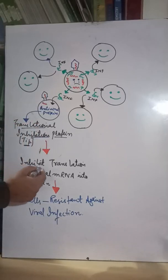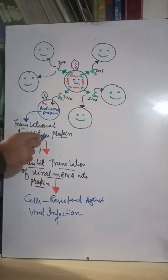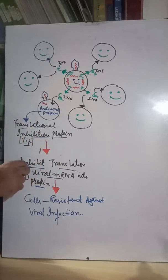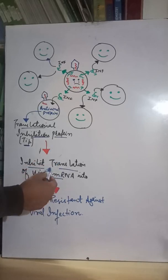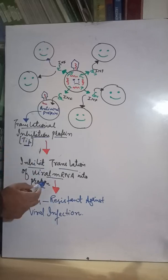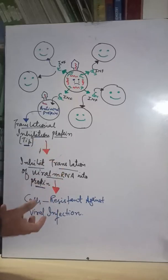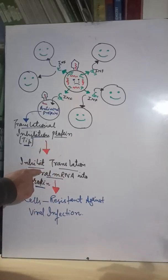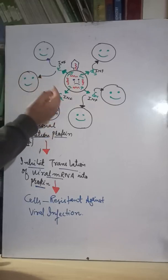These translational inhibiting proteins (TIPs) protect the neighboring cells from the virus by inhibiting the translation — that is, the protein synthesis — of viral mRNA. These proteins stop the translation of viral mRNA into protein, so viral protein formation is inhibited. Since the virus needs to replicate and requires protein to form multiple copies, blocking that protein formation stops the viral replication.